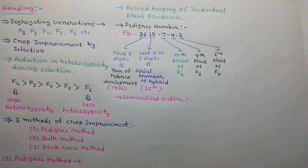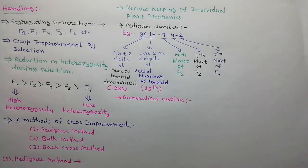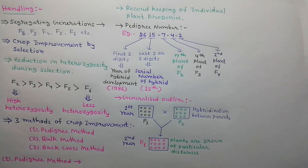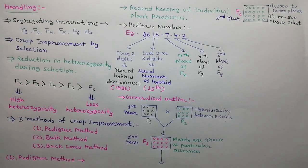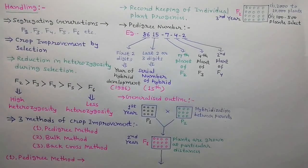We can describe the pedigree method by a generalized outline. In the first year, parents P1 and P2 are hybridized with each other, and as a result we obtain hybrid seeds. In the second year, hybrid seeds are grown in a field at particular distances to obtain F1 generation. In the third year, F2 generation is raised in which 2,000 to 10,000 plants are grown at particular distances. From these plants, 100 to 500 plants with superior characters are selected.